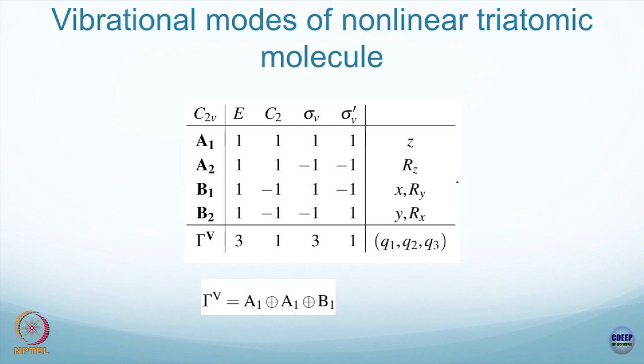You can see that the trace turns out to be 1 for the C2, and similarly for sigma v prime which is the yz plane, you can find out what is the trace. Once I have this, what do I have to do? I have to find out what is the number of times any of these irreps occurs in the reducible representation. Then it will tell me what are the irrep language for the vibrational degree of freedom or the normal modes.